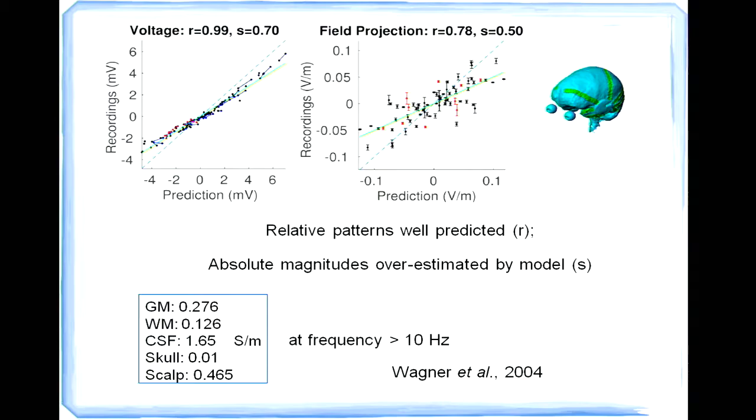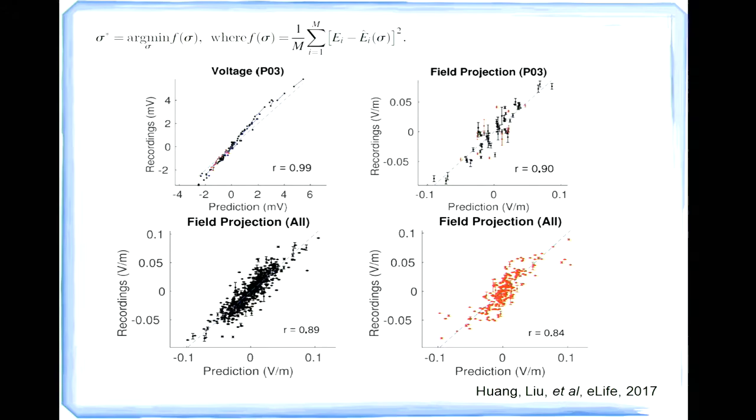And the other interesting thing is if you use literature connective values in the model, the model always ends up overestimating the absolute magnitude for both the voltage and the electric field. As you can see by the slope of this green line here. So basically the recording is 70% of the model for the voltage and 50% of the model for the electric field. So something must be wrong with the literature connective values because as I said before, it's measured under frequency higher than 10 Hertz and our recording is done only under frequency of one Hertz. So we're trying to adjust that connectivity value to make the model match the data as close as possible. And after that, we got the slope right and slope of one and the correlation is still pretty strong.